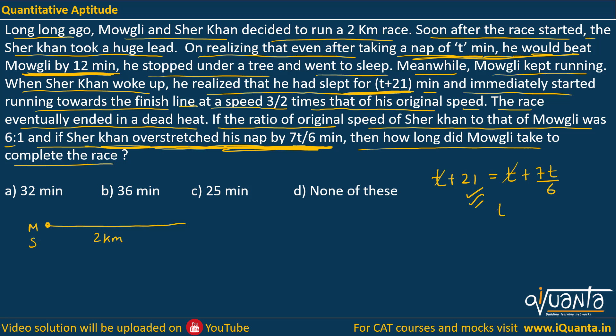Setting these equal, T cancels out and the value of T we get equals 18. So he stretched his nap by 18 minutes — meaning he originally thought of taking a nap of 18 minutes. Now, it was given that the ratio of original speed of Sher Khan to that of Mowgli was 6:1.